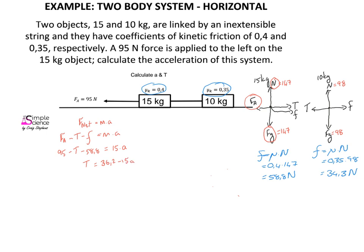For the 10 kilogram object, starting with Newton's second law: F_net = ma. There is only one force acting to the left — the tension force — and only one force acting to the right — friction. So T − 34.3 = 10a, which simplifies to T = 10a + 34.3.